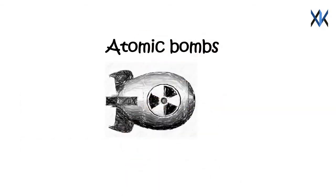In atomic bombs, a mass of fissile material that is enriched uranium or plutonium is assembled into a supercritical mass, which is the amount of material needed to start an exponentially growing nuclear chain reaction.